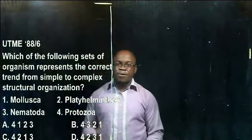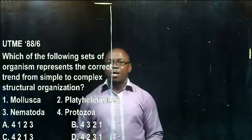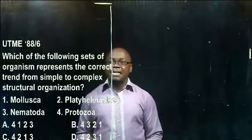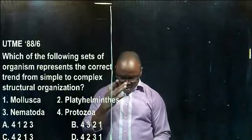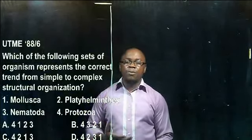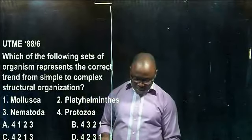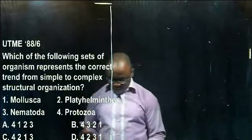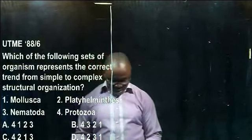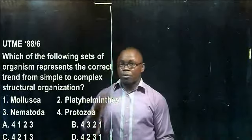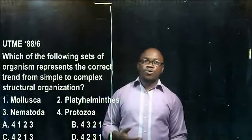Now, the four sets of organisms they give: one, they give Mollusca — that's where you have snails and slugs; two, they give Platyhelminthes — that's the flatworms like tapeworm and the liver fluke; three, they give Nematoda — those are the roundworms, the parasitic worms; and four, they give Protozoa.